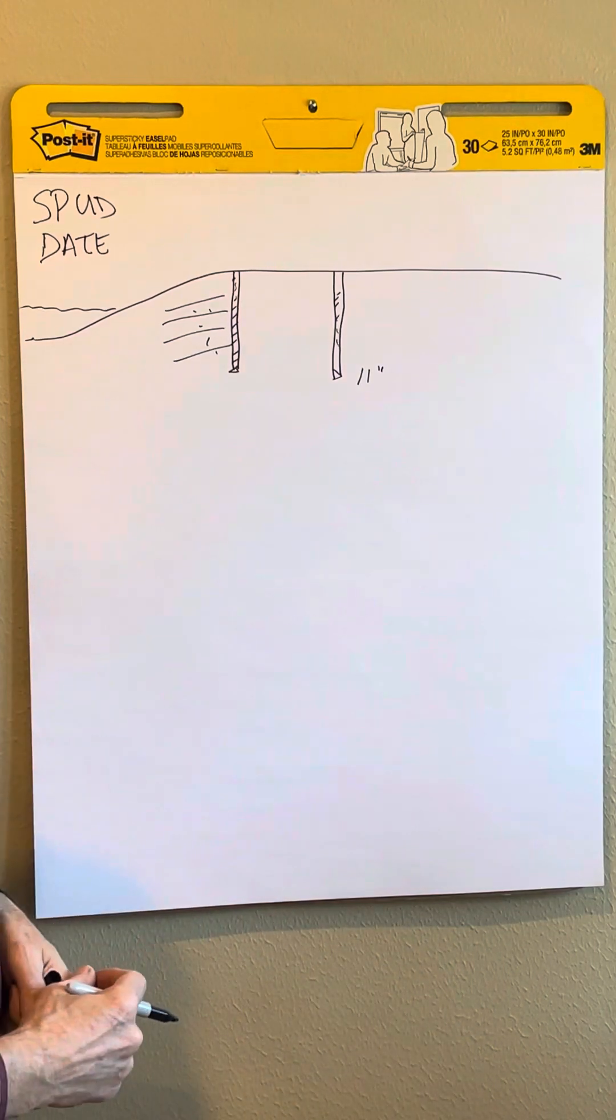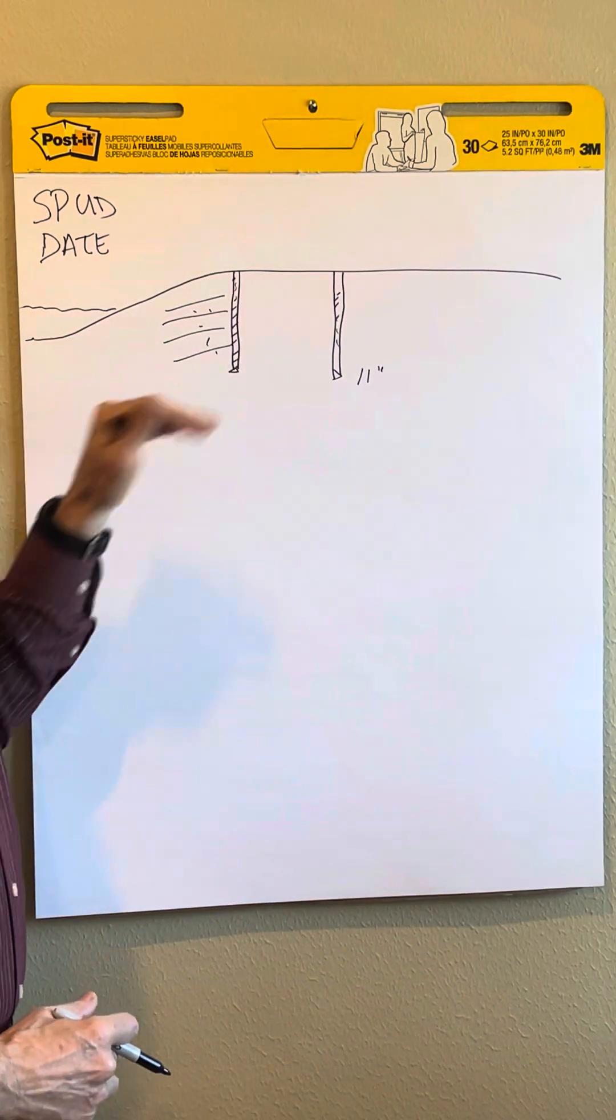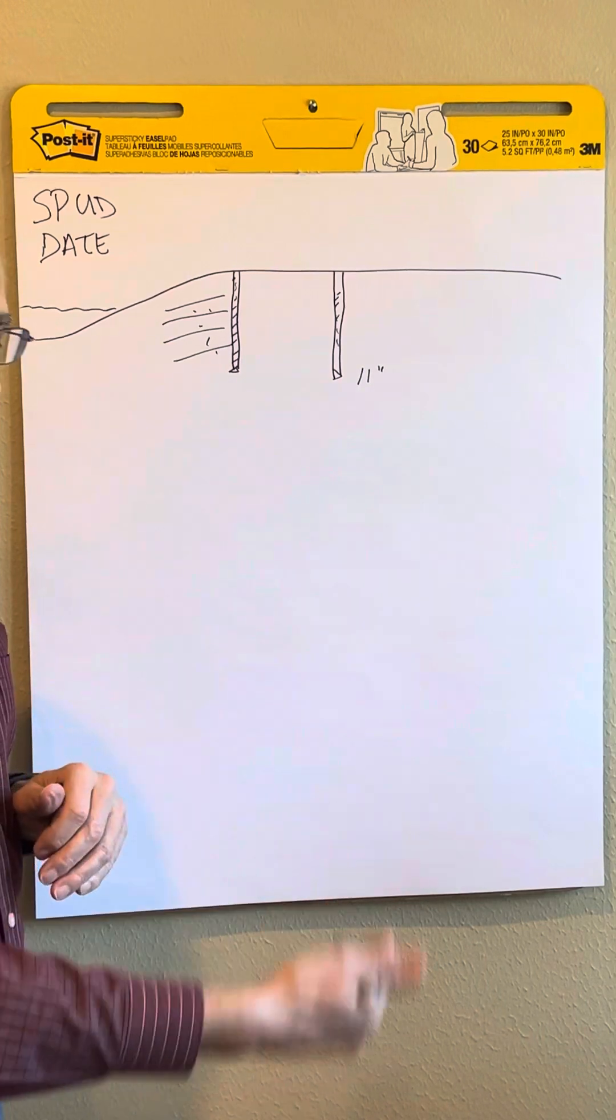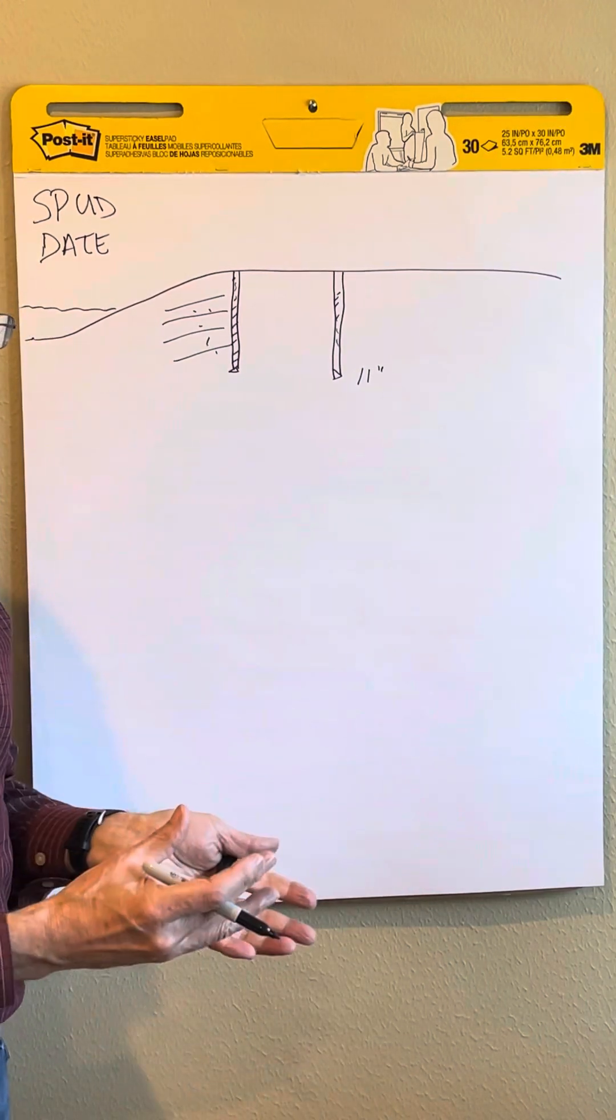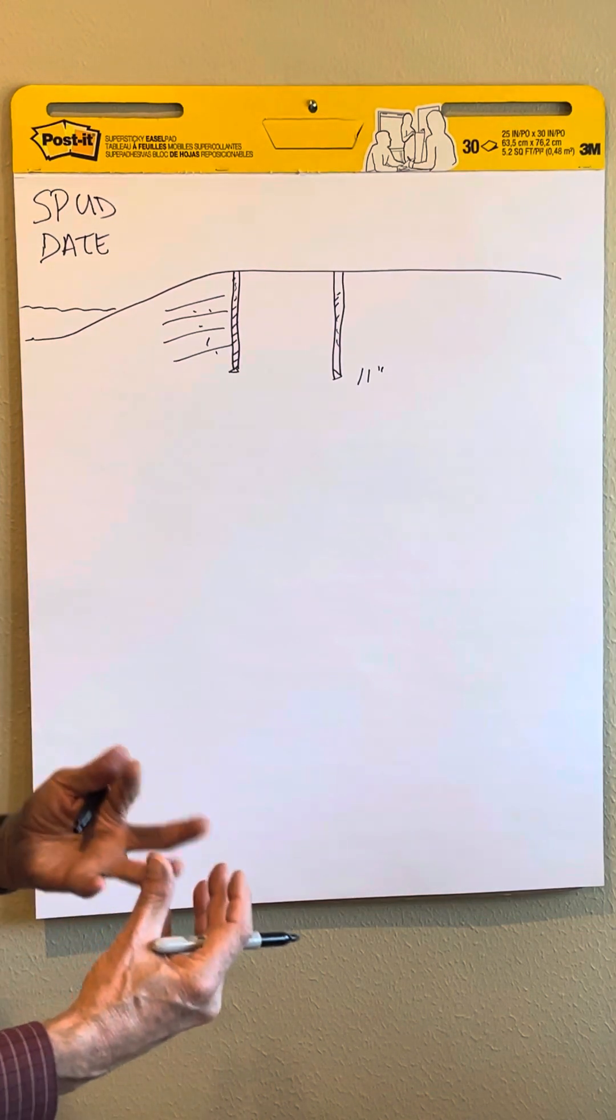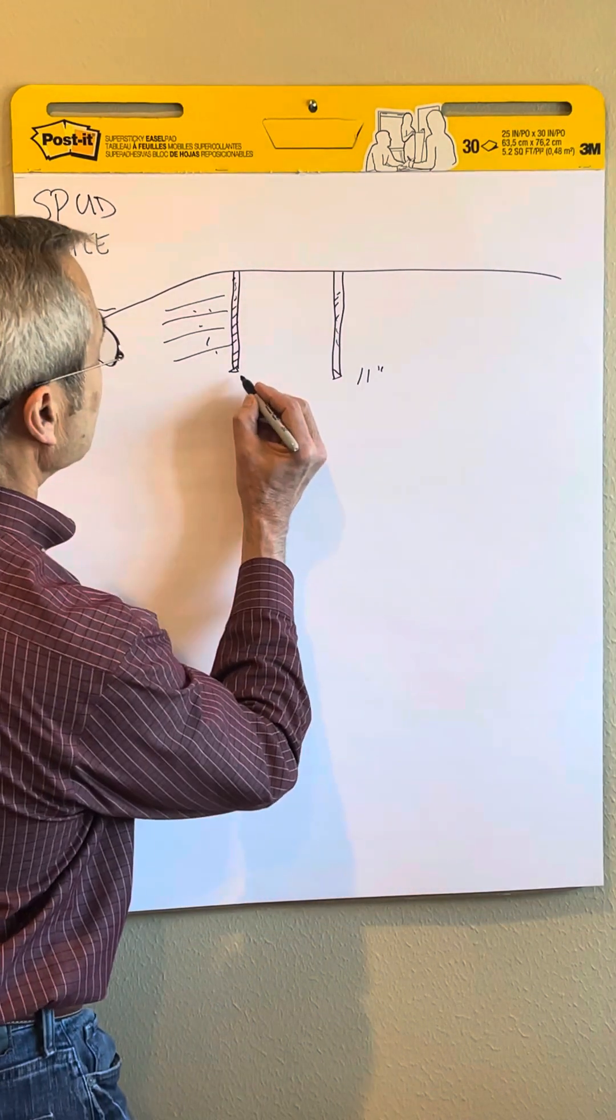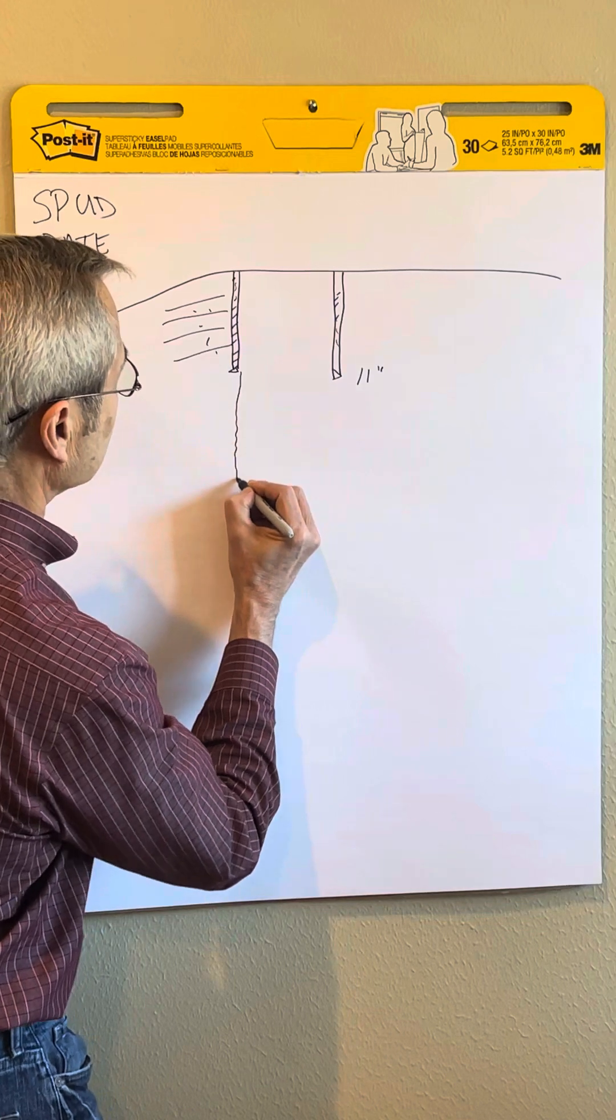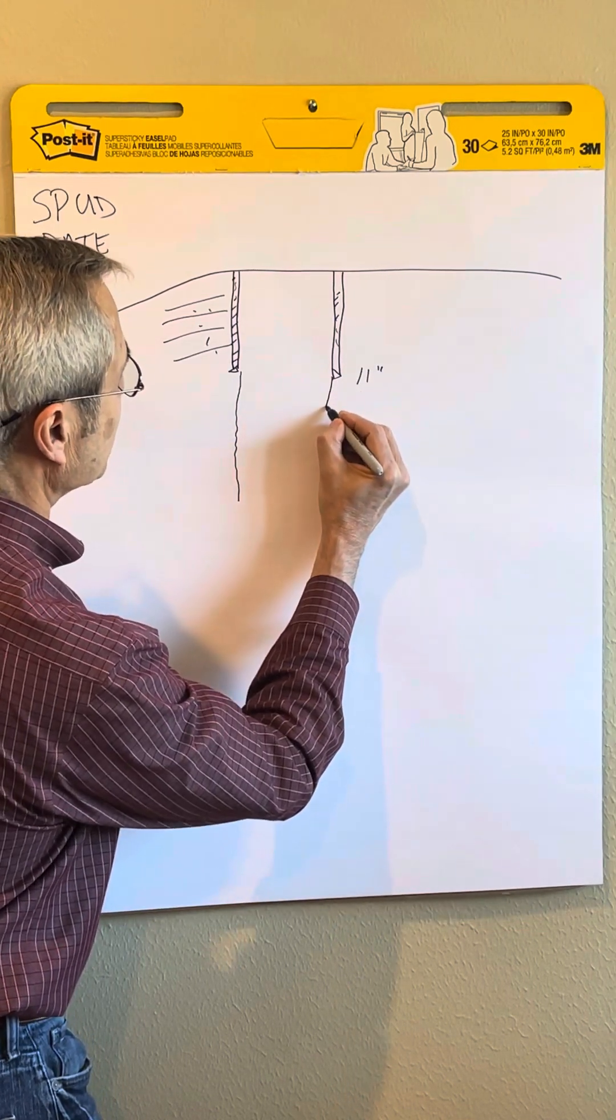Once you get that part, the next part is to go ahead and drill deeper. Depending on the depth of the well and the pressures, you may have to set an intermediate string of casing. You drill a little bit further till you get into some of the higher pressures.